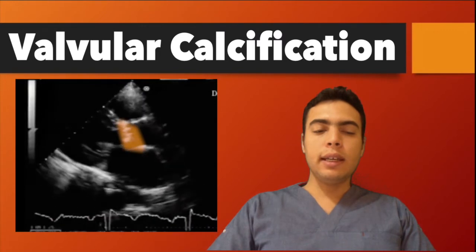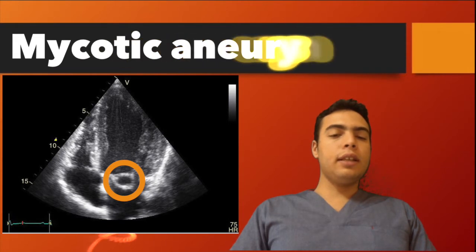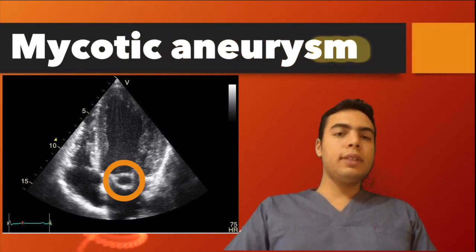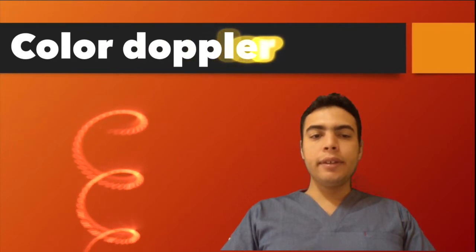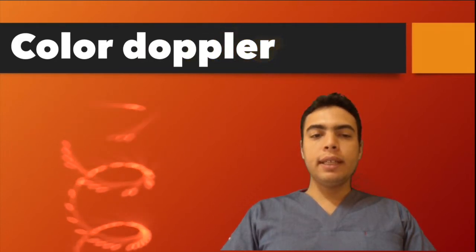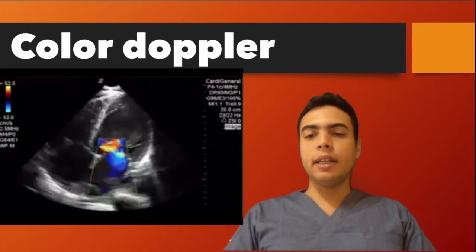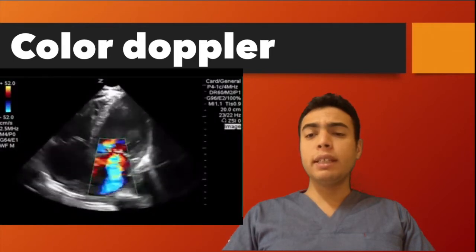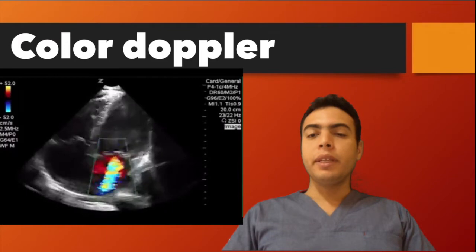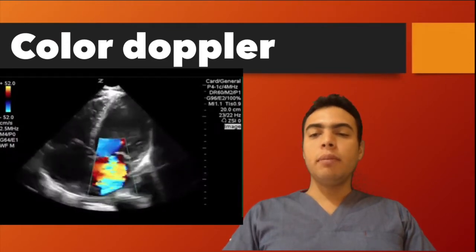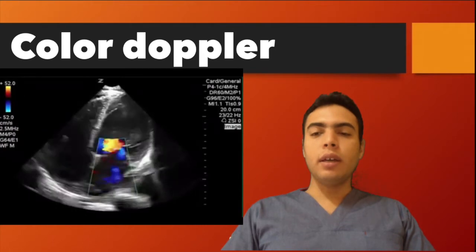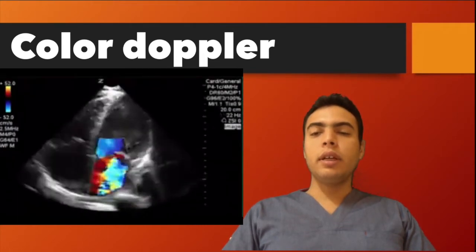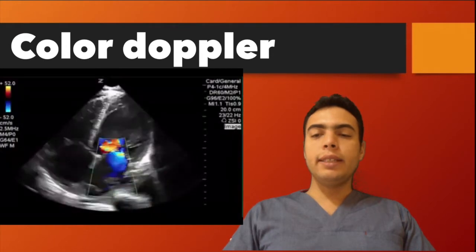Here is a mycotic aneurysm of the mitral valve, as you can see circled here. With color Doppler in mitral regurgitation, you can see aliasing appearing as a mosaic color jet, representing the regurgitant backflow of blood at very high speed recorded by the Doppler.